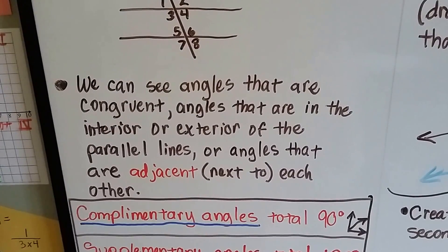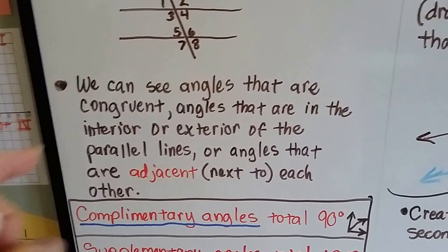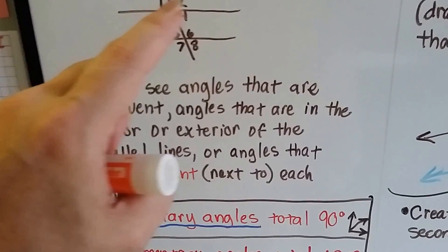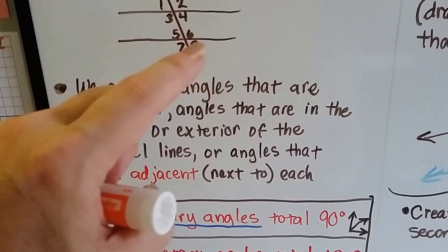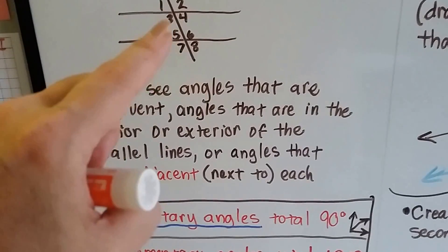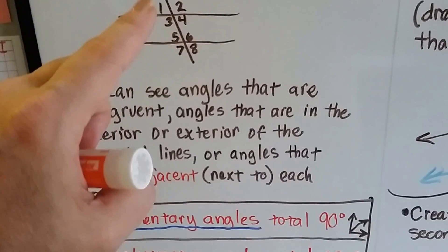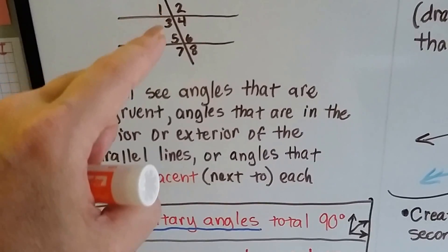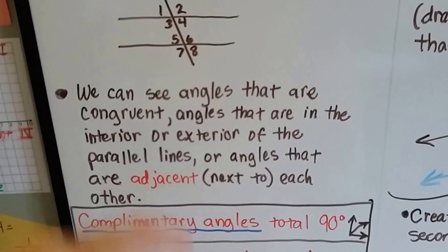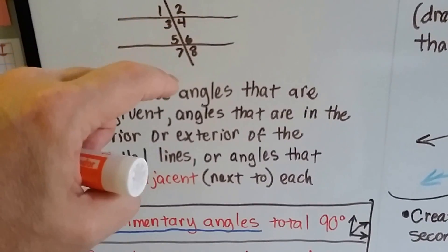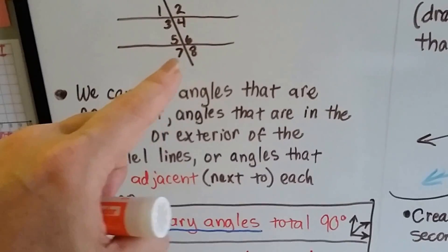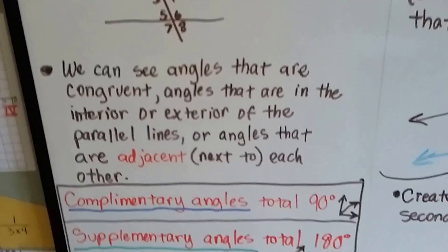We can also see angles that are adjacent — meaning next to each other. So 1 and 2 are next to each other, 6 and 8 are next to each other, 5 and 7 are next to each other, 1 and 3 are next to each other, and 3 and 4 are next to each other. But they don't go across — they have to be side by side, no cutting across.